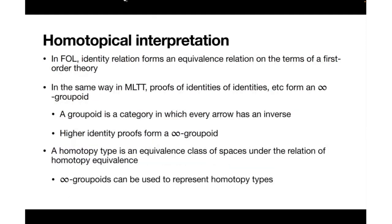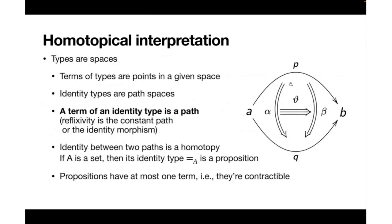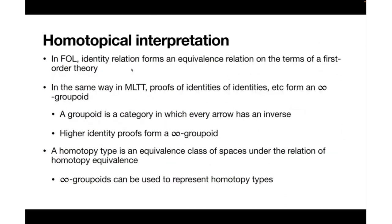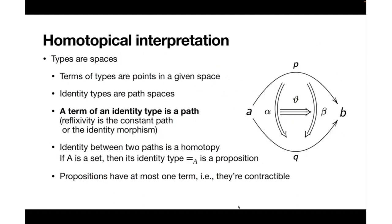In Martin-Löf type theory we have proofs of identities of identities of identities, and this corresponds to the idea that we can form paths between paths between paths. This is the homotopical intuition behind the identity types of identity types. This is why there is homotopy invariance: a homotopy type is an equivalence class of spaces, and identity types are infinity groupoids with these higher identity proofs.